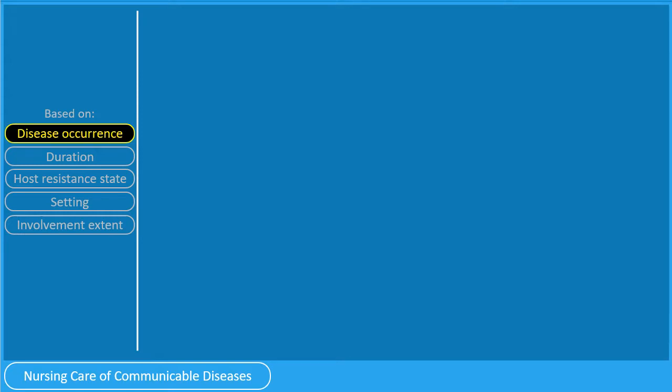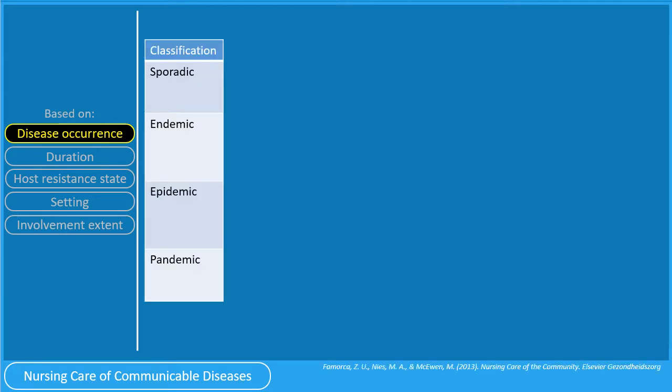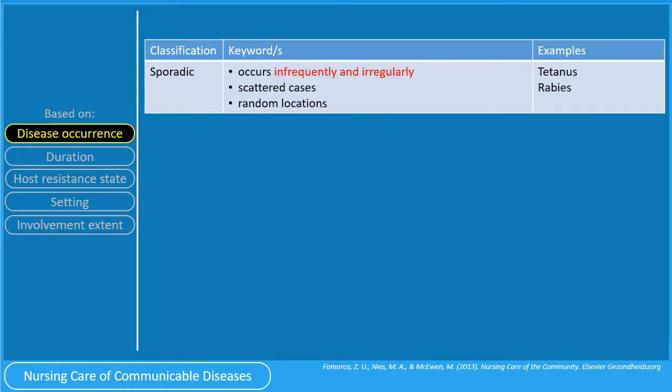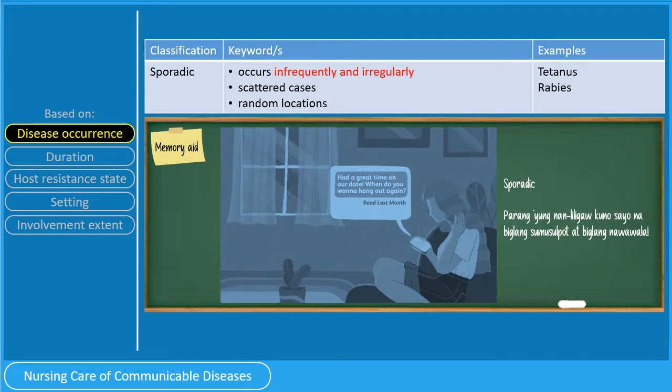Let us start on the classification based on disease occurrence. It may be any of the following: sporadic, endemic, epidemic, or pandemic. A disease is considered sporadic if it occurs infrequently and irregularly. There is a scattered occurrence and cases appear in random locations. In other words, there is no discernible temporal or spatial pattern. Examples of diseases classified as sporadic are tetanus and rabies. Again, sporadic means it occurs infrequently and irregularly.